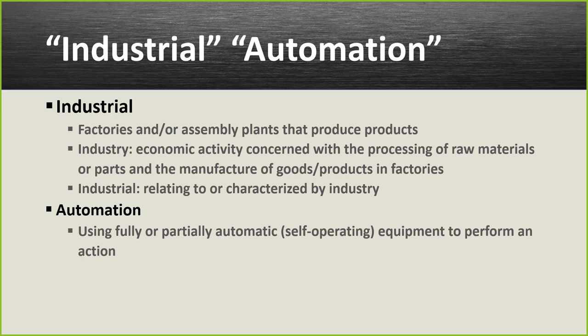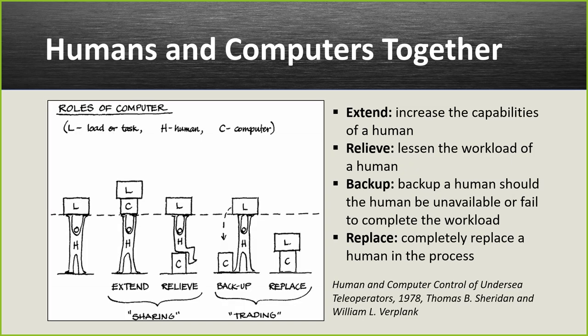Automation has become pervasive in the consumer space and is also used in industrial space. A great explanation comes from a 1978 document by Thomas Sheridan and William Verplank titled 'Human and Computer Control of Undersea Teleoperators.' They describe four ways automation can be used: to extend, to relieve, to back up, and to replace humans.